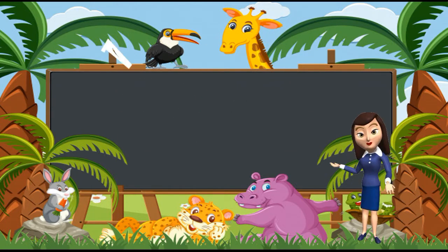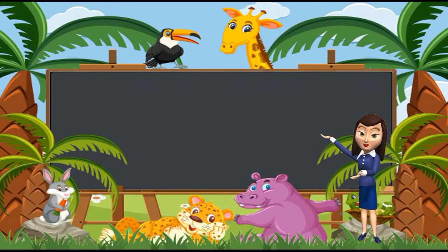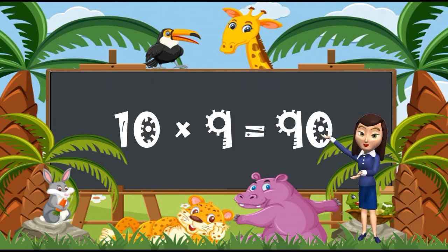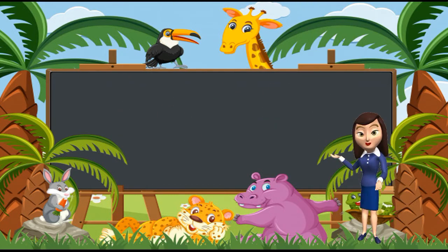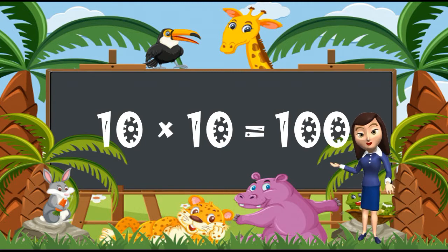10 sevens are 70. 10 eights are 80. 10 nines are 90. And 10 tens are 100. So kids, this is the table of 10.